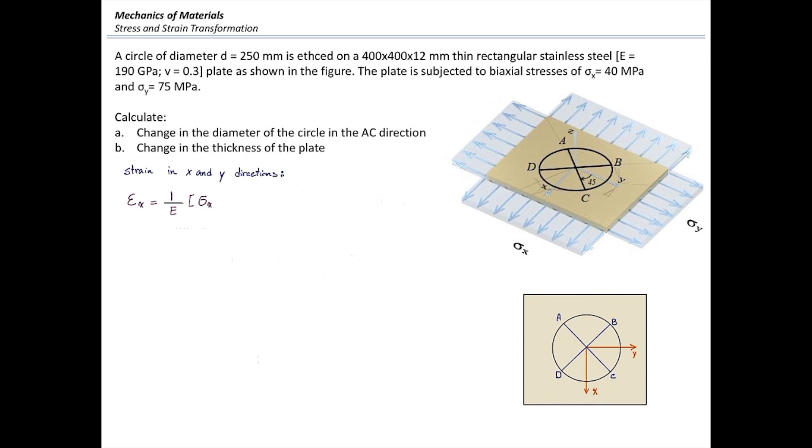Epsilon x is one over E sigma x minus nu sigma y. E is 190 gigapascals, which is equal to 190,000 megapascals. Sigma x is 40 megapascals. Sigma y is 75. Poisson's ratio is 0.3, and that would give us strain equal to 92 micro epsilon.